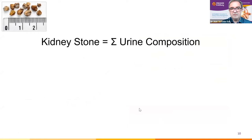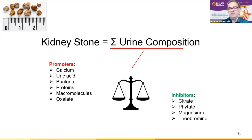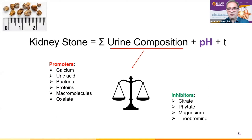We could say that kinestone is the sum of the urine composition, which in a normal situation is a balance between promoters and inhibitors. But we need two other factors for a stone to form: pH and time.